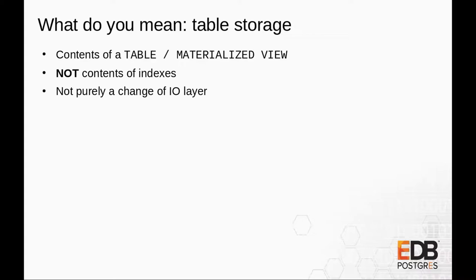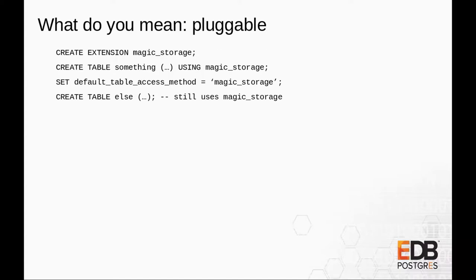It's not just that we change the IO layer — it's much more widely than just the lowest level of how we issue IO. And what do I mean by pluggable? The goal is to be able to do CREATE EXTENSION magic_storage_format and then afterwards be able to create tables with that storage format. You can also set the default for the current connection or for the entire server. You can set the configuration inside the session or in the configuration file, and from then on all tables created where storage is not explicitly specified will use the new access method. So it's runtime extensible — that's why it's pluggable.